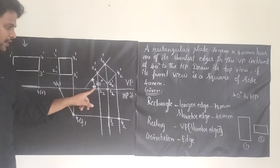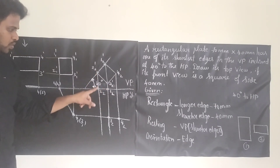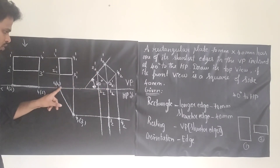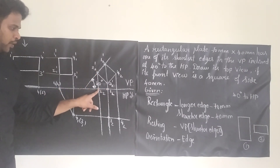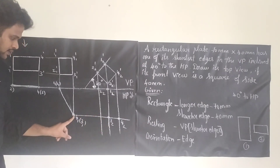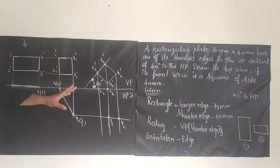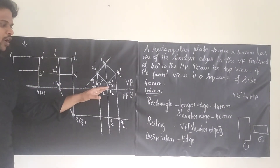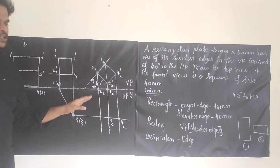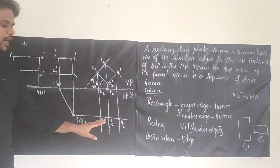Point 1 and 1 will be meeting at one point — mark that point. This 2 and 2 will be meeting at one point — mark that point. This 3 and 3 will be intersecting at one point — mark that point as 3. Same way for 4. Now we have identified all four corners. Just join all four corners and we will be getting a rectangle shape. Try to erase the unwanted lines.